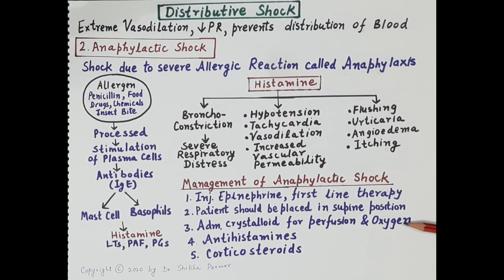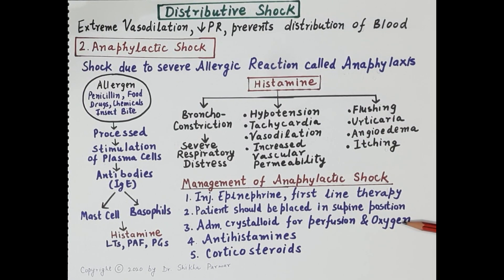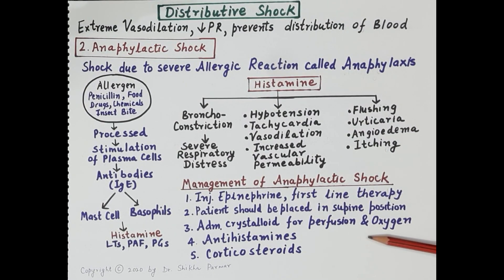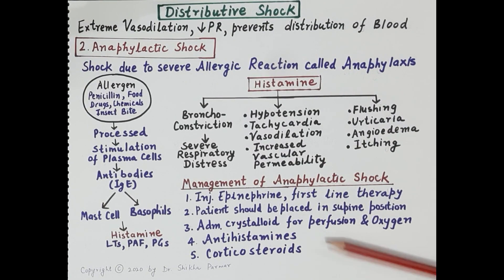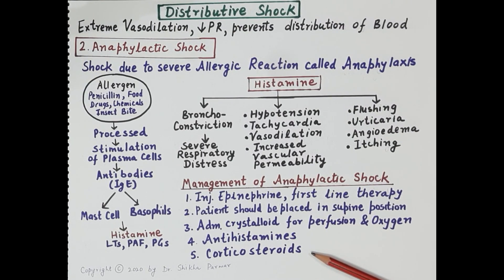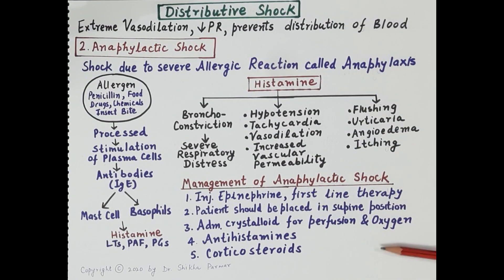Crystalloids such as normal saline and Ringer's lactate should be administered to improve tissue perfusion. Oxygen should be provided by face mask due to bronchoconstriction. Antihistamines should be given to control the allergy, and if required, corticosteroids can be administered as they are potent immunosuppressant and anti-inflammatory agents. This is the management of anaphylactic shock.